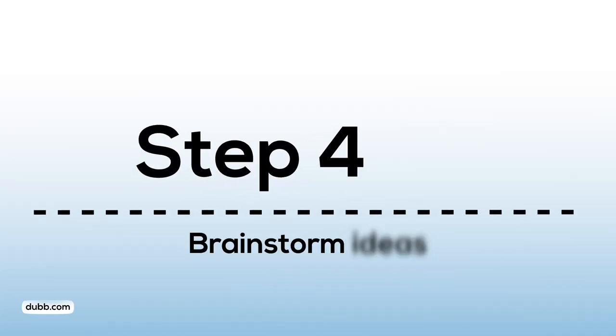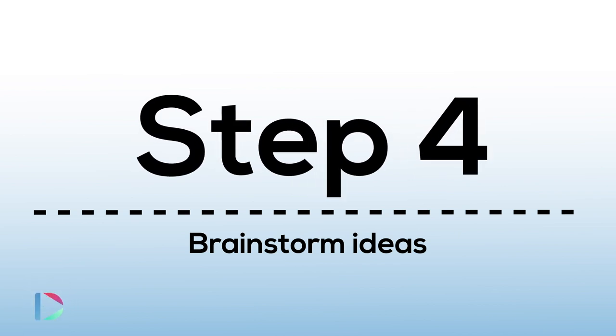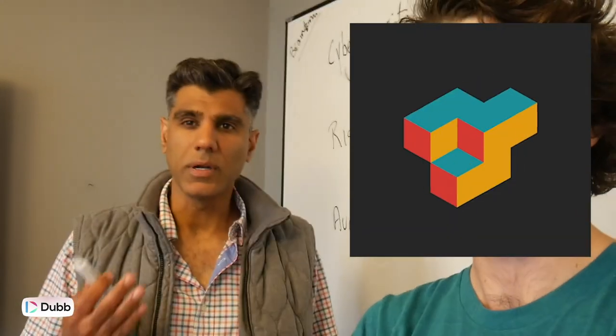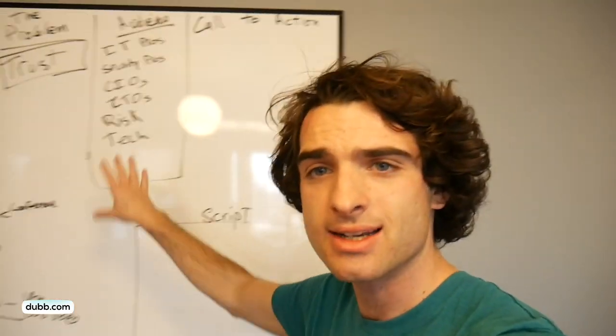Step 4: brainstorm ideas. Brainstorm as many ideas as possible and write them down, even the bad ones — no bad ideas, just rapid fire. This is a safe space. Brainstorming, the whiteboarding. Keep it simple, have a really simple premise. The challenge is always to make it interesting — how do you make a product demo something fun to watch? Have all these concepts on the board. Be open to all ideas and then let them ruminate. Come back later and then edit them down until you find the idea that resonates the most.